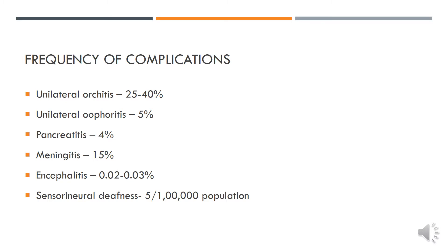Regarding the frequency of complications: unilateral orchitis and oophoritis are more common; bilateral presentation is rare. Unilateral orchitis is seen in 25–40% of affected individuals, and unilateral oophoritis in 5% of cases. Pancreatitis can occur in 4%, and meningitis in about 15%. Encephalitis is rarer, occurring in 0.02–0.03%, and sensorineural deafness is seen in about 5 per 1 lakh population.